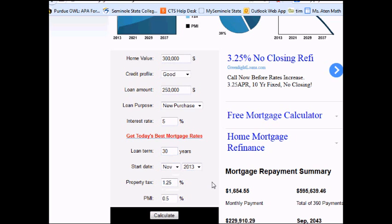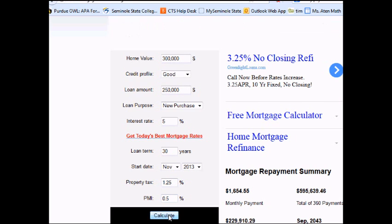We'll say our interest rate is 5% for 30 years, and we'll just say we're going to start it next month. So you put in the property tax and the PMI. This is stuff that you'll find out from the county, and the loan originator can tell you that. And then you click calculate.